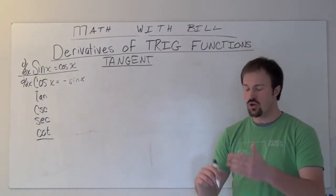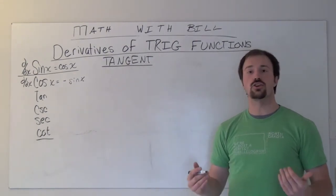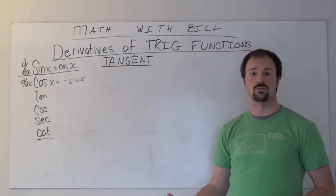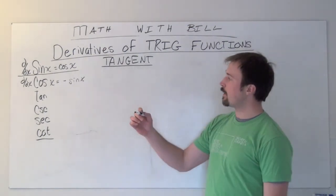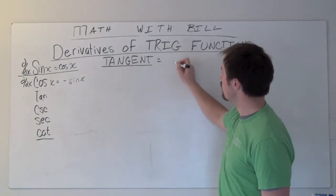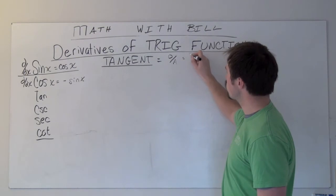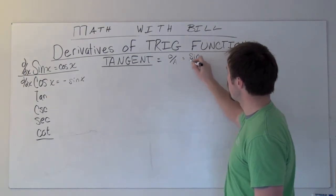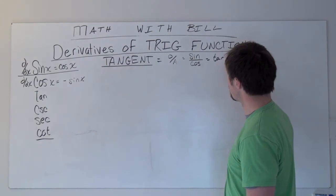If you're doing trig derivatives, it's really important that you already understand a lot of trigonometry. Remember that the tangent ratio is the opposite over the adjacent or it's equal to sine divided by cosine. That again is tangent.